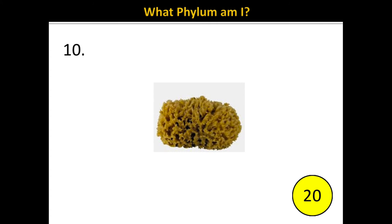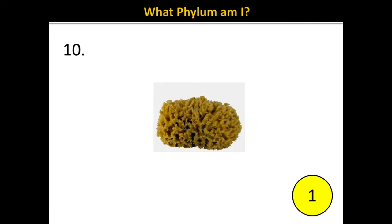Now you will be looking at pictures of animals, and based on the picture you want to write down the phylum of animal that the picture is representing. Here is number 10. The correct answer is Porifera. This is a picture of a sponge.